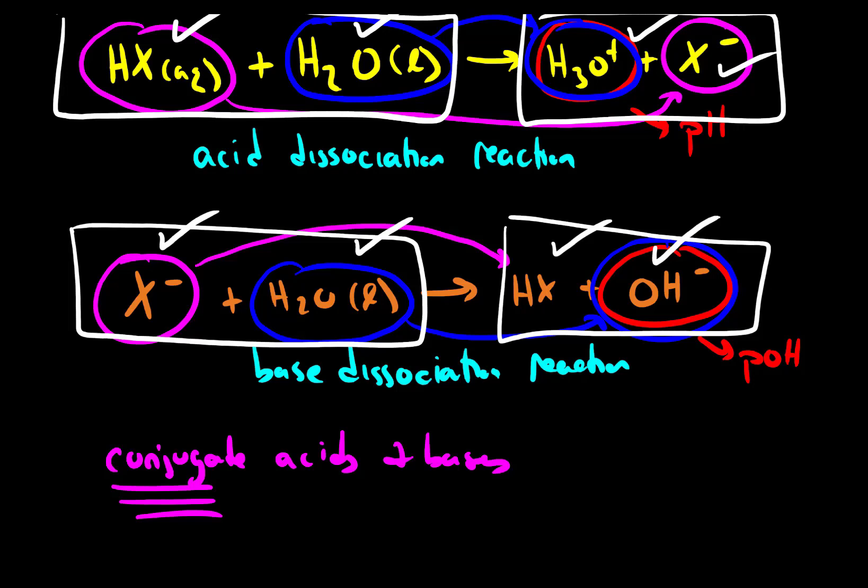Everything has a pair. Where you see an acid, you also must see a base. This acid, HX, becomes a base. This base, water, becomes an acid, hydronium. So it's important to recognize that everything comes in pairs.